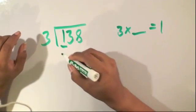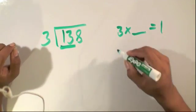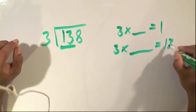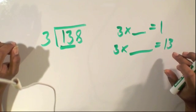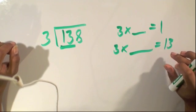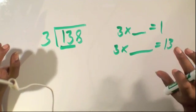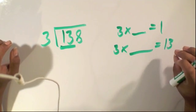So, the next step is to look at the 2 digits, and we can ask the same question. 3 times what number will give me 13? Now, let me give you a hint, you don't exactly have to have the exact result of 13, you can actually have just a number that's close to 13, and a number that doesn't go over.